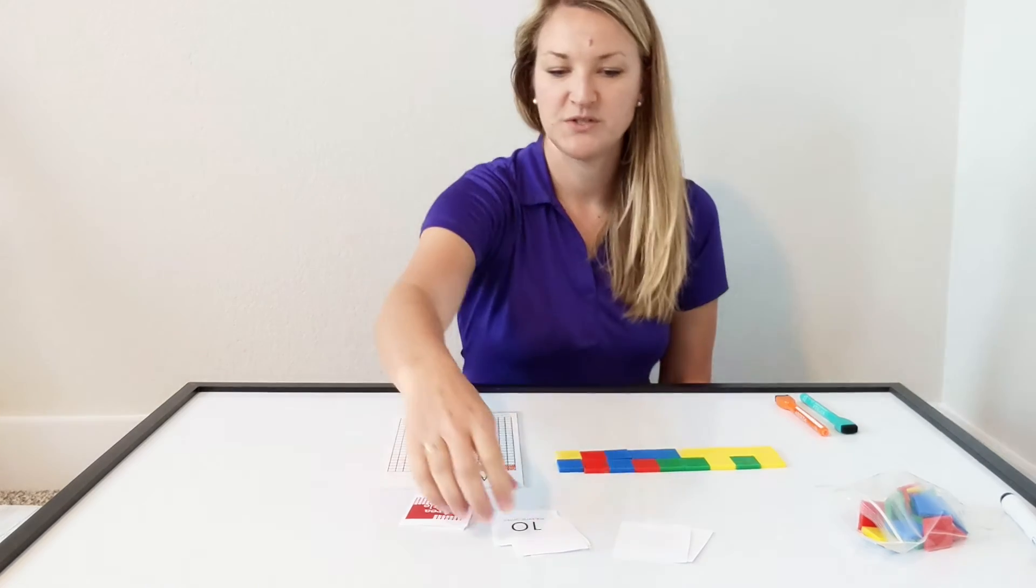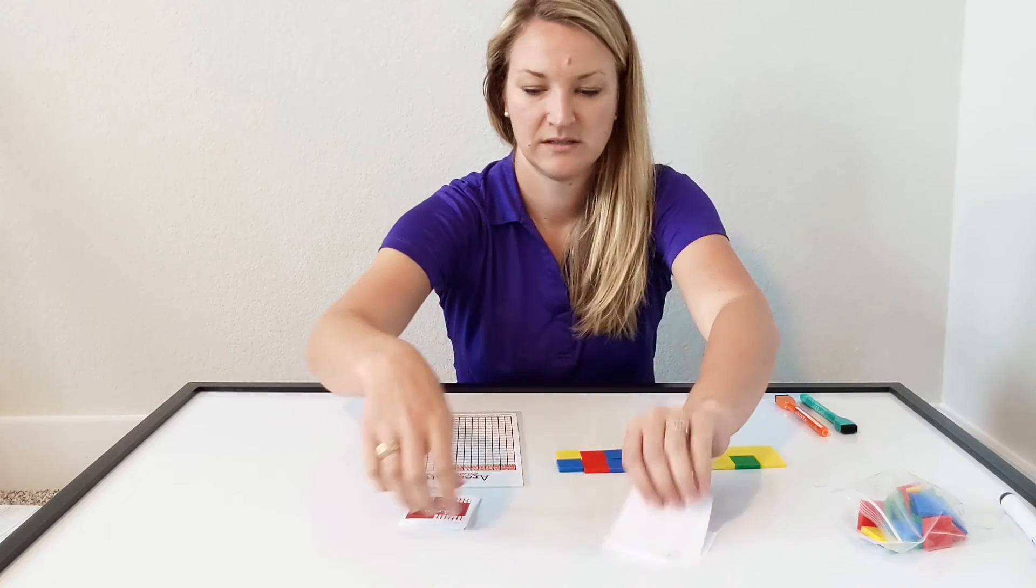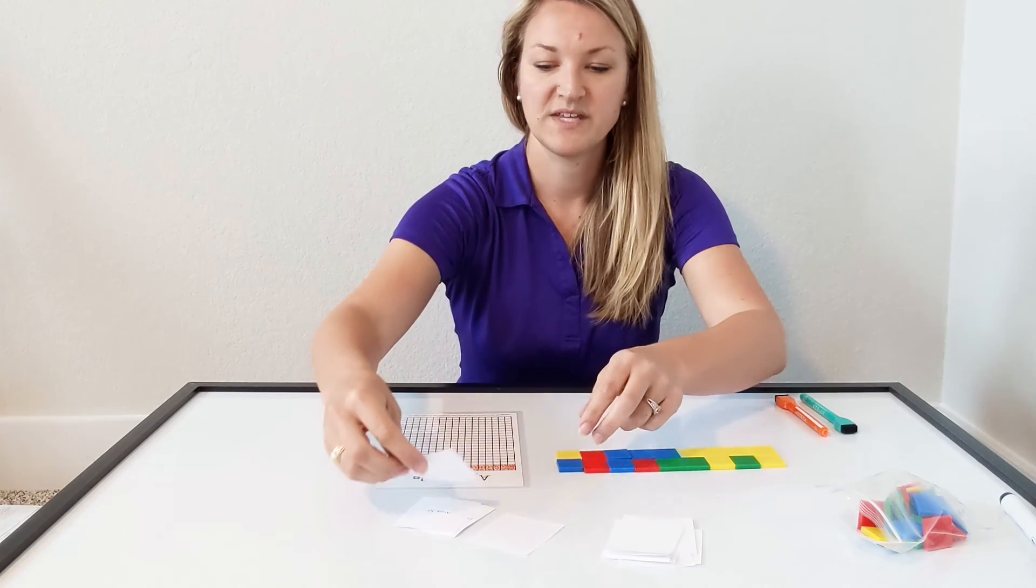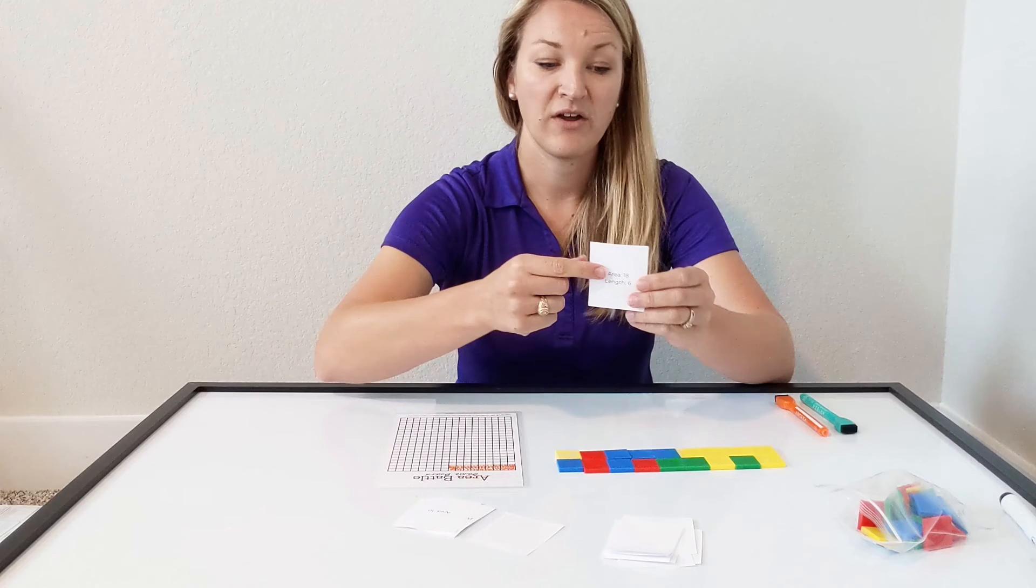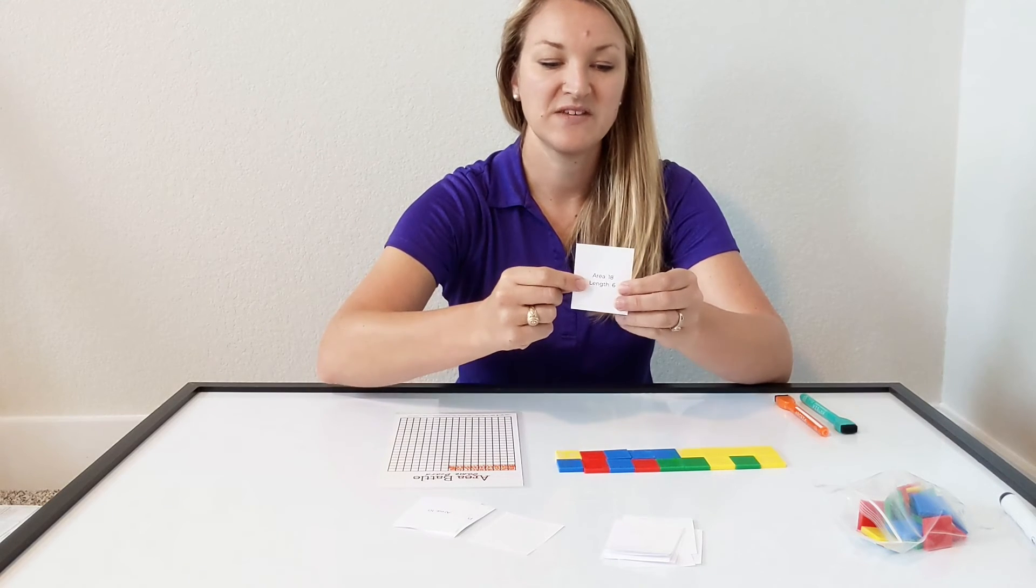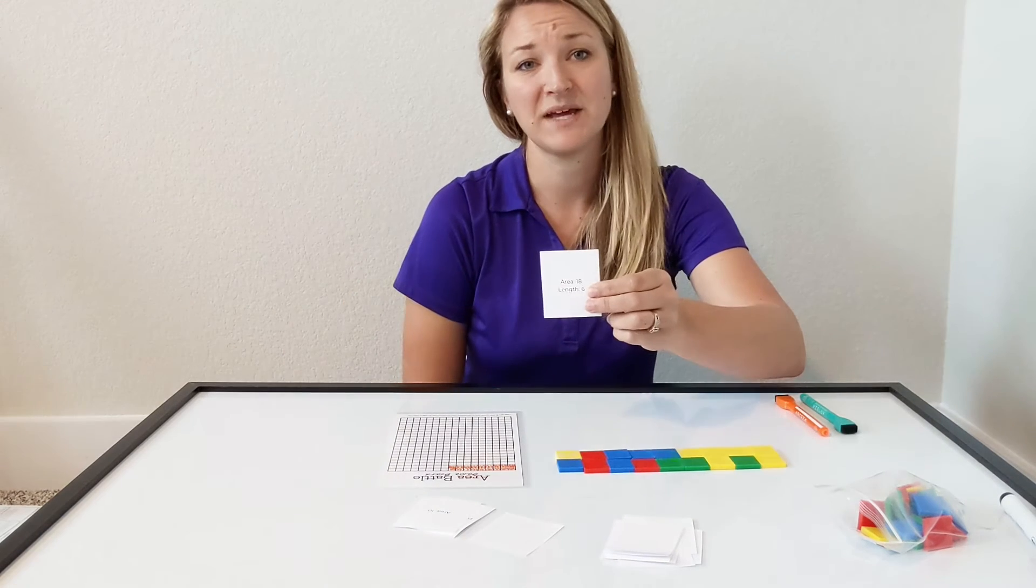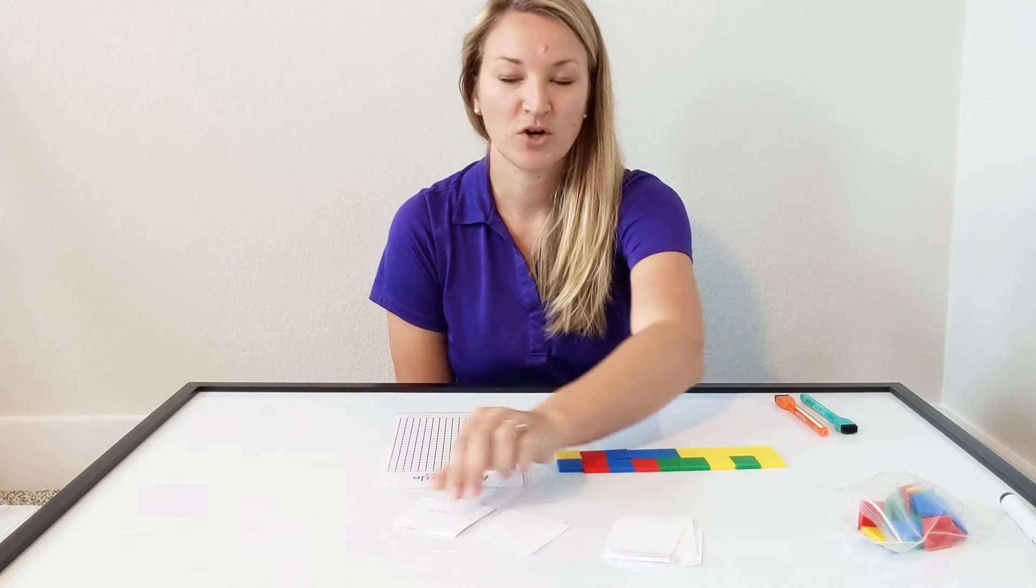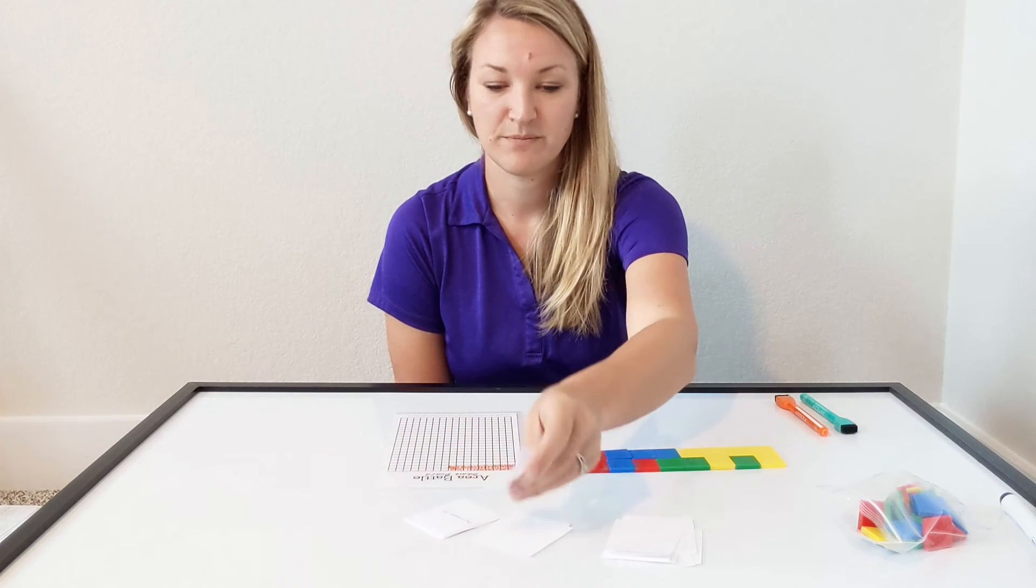Now for the older students, their clues are a little bit harder to figure out. For example, they may be given an area of 18 and a specific length. They say the area needs to be 18, but the length needs to be 6. So they have a little bit more criteria to go by in order to build their rectangles.